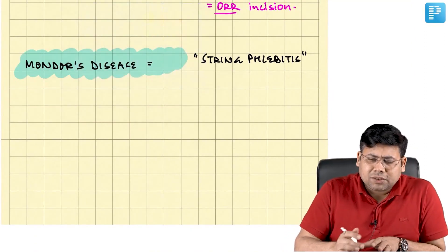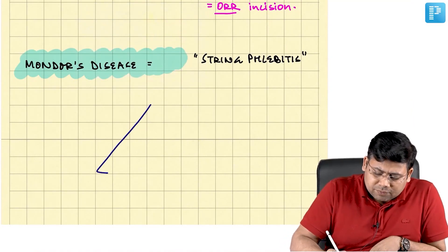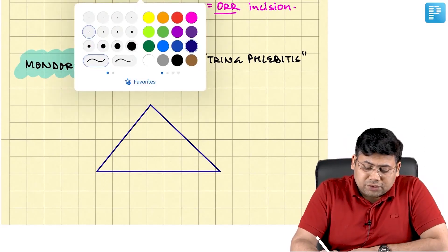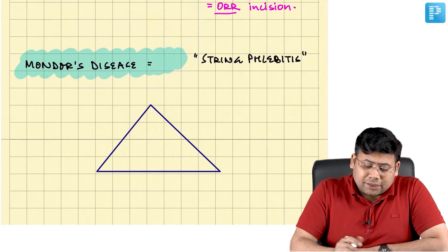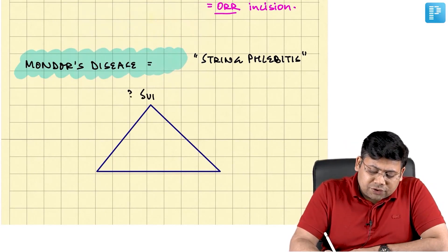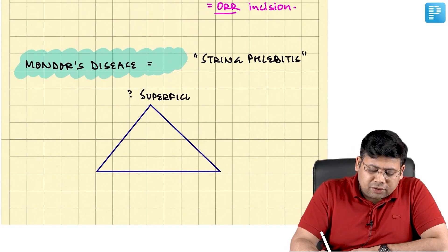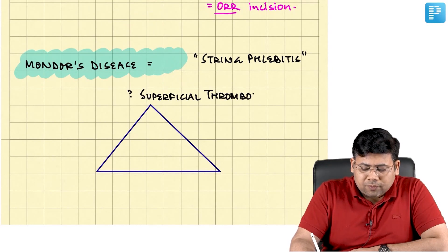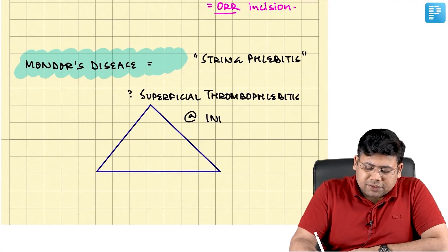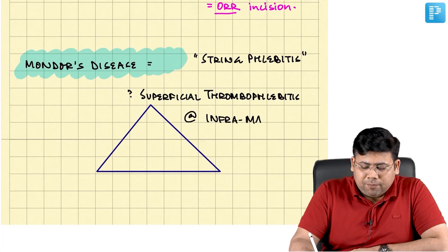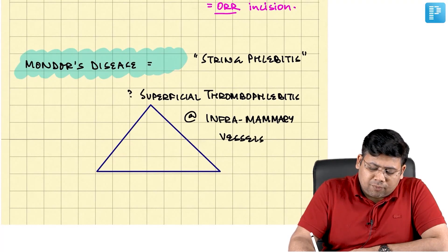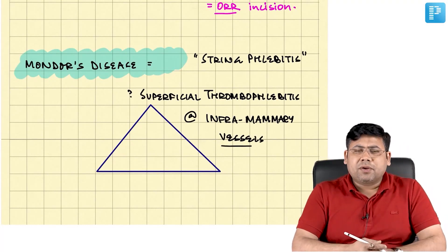Let us understand the basic concept of Mondor's disease. It is superficial thrombophlebitis of inframammary vessels.